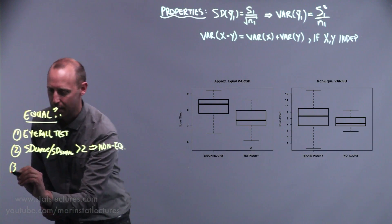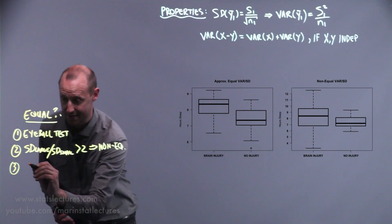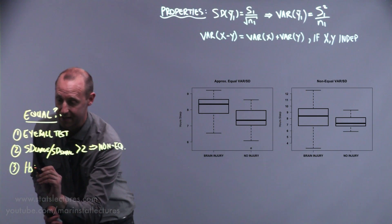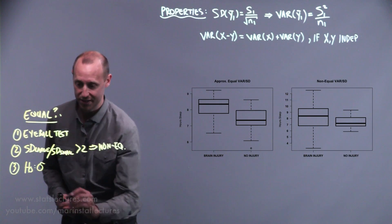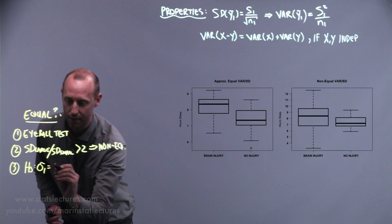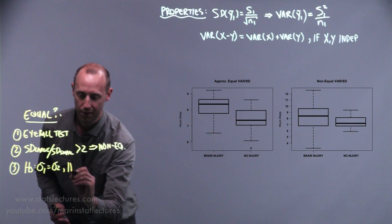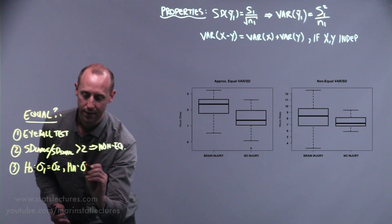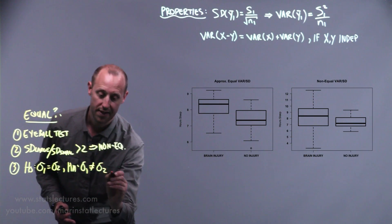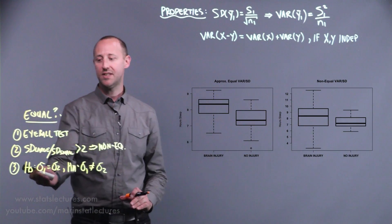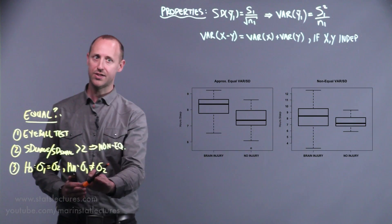These two approaches are a bit subjective, but you can also do more formal tests. You can test the null hypothesis that at the population level the standard deviation of group one is the same as group two, versus the alternative that they are not. These are sometimes expressed in terms of variances being equal versus not equal.